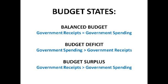Now we're going to look at the three different budget states — really important terminology to use in your essays, and examiners expect you to know all of these. A balanced budget is when government income equals government expenditure. A budget deficit is when spending is greater than taxation income — money going out of the government. A budget surplus is when the amount the government receives is greater than the amount it's spending.